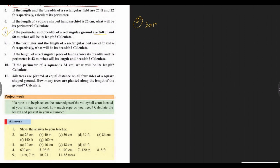If the perimeter and the breadth of a rectangle are 360 meter and 60 meter, what will be its length? Calculate. Perimeter of rectangle.